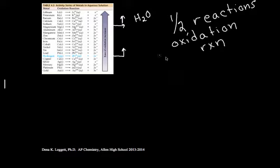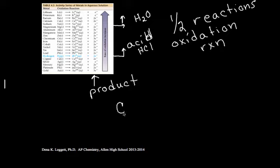However, all elements above hydrogen on this series are showing us half reactions. It's simply showing the oxidation reaction of the metal. We know it's an oxidation because electrons are a product. Remember, oxidation is loss. So our electrons are a product. Everything above hydrogen will react with acids, typically simple acids like HCl.